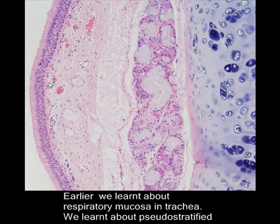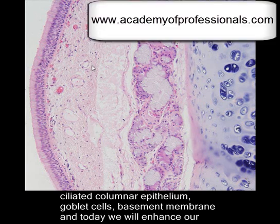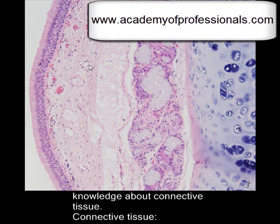Earlier we learned about respiratory mucosa, we learned about pseudo-stratified ciliated columnar epithelium, we learned about goblet cells, we learned about basement membrane, and today we will enhance our knowledge about connective tissue — specifically the connective tissue of mucosa.